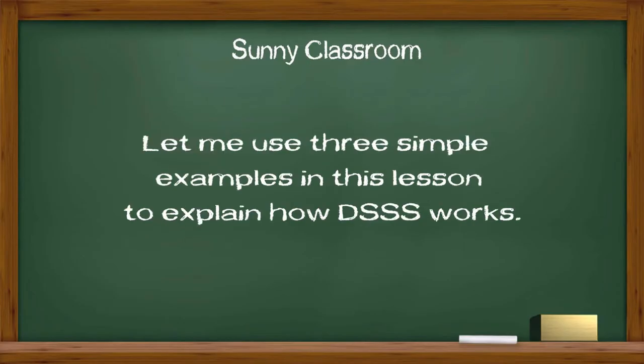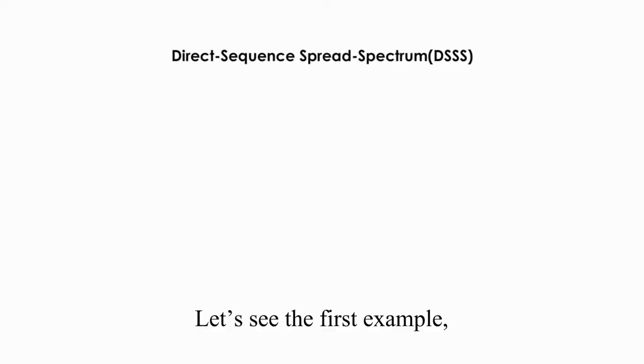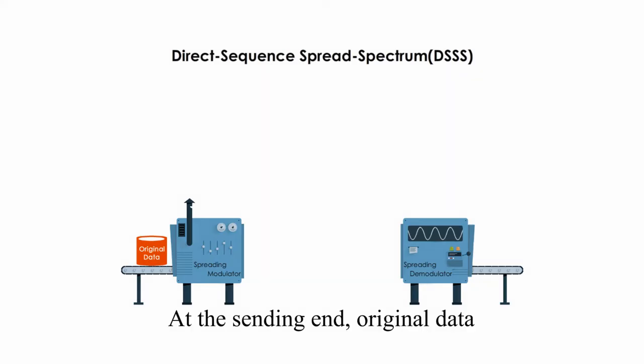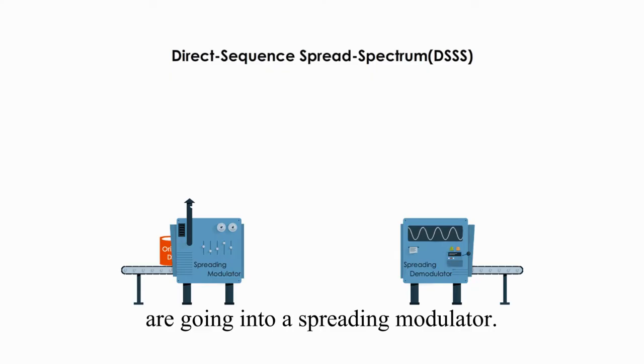Let me use three simple examples in this lesson to explain how DSSS works. Let's see the first example, a very simple and general process. At the sending end, original data are going into a spreading modulator.